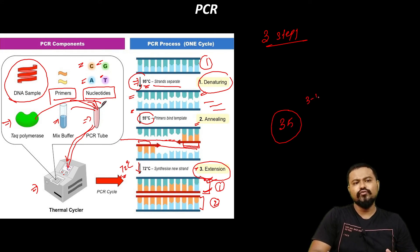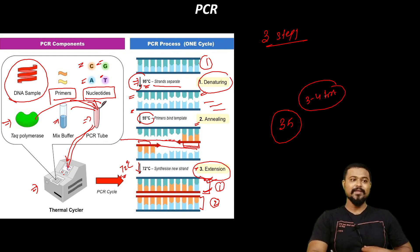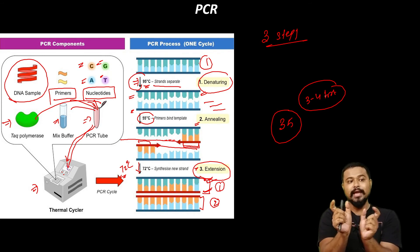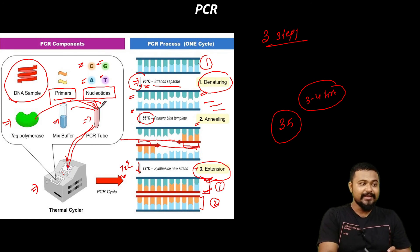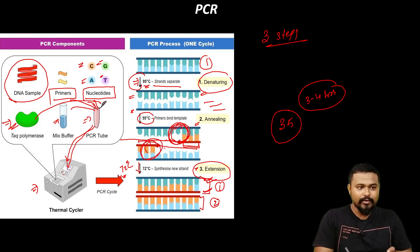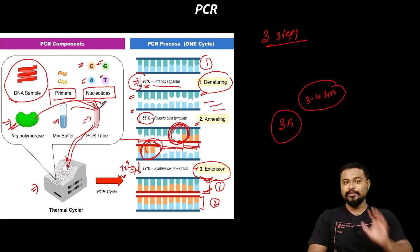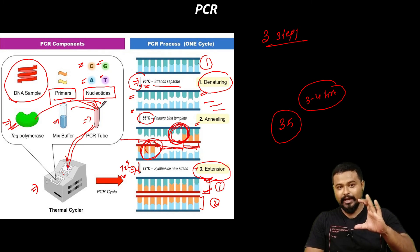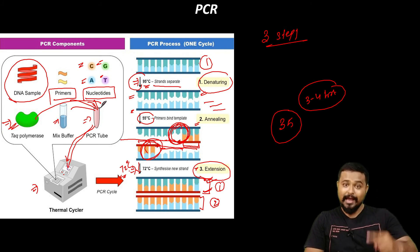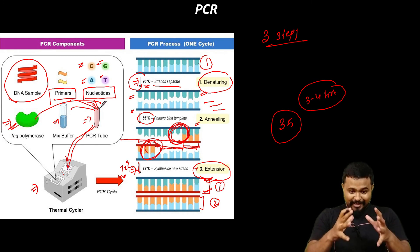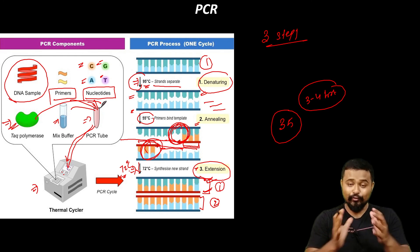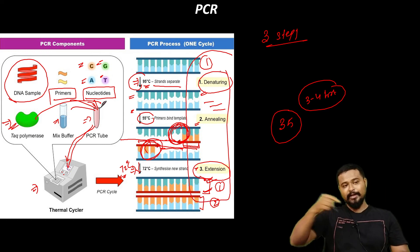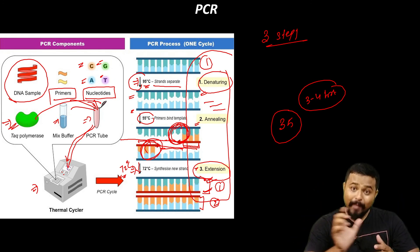After around 35 cycles, there are billions of copies. These 35 cycles are completed in around 3 to 4 hours. The three steps in each cycle are: first, denaturation; second, annealing; third, extension. In denaturation the temperature is 95 degrees Celsius; in annealing it is 55 degrees Celsius; and in extension with Taq polymerase it is 72 degrees Celsius. Each cycle repeats: 95, 55, 72 — and after 35 cycles, you have billions of copies of your DNA fragment.